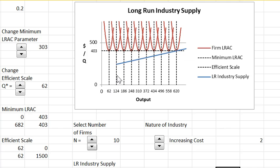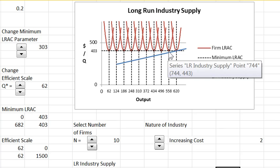And again as you get more output, the explanation for output is entry. New firms each producing at minimum average cost.